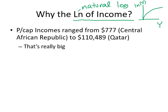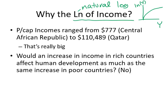Why would we want to do this? Well, our per capita income values are really far apart — from $7.77 for Central African Republic all the way up to $110,000 for Qatar, and that's really big. But if we increase $100 for Central African Republic and we increase $100 for Qatar, do they have the same effect? And obviously the answer is no, they don't.